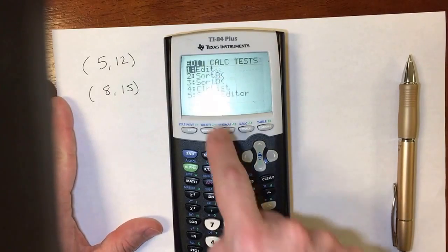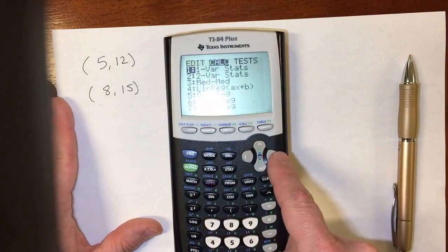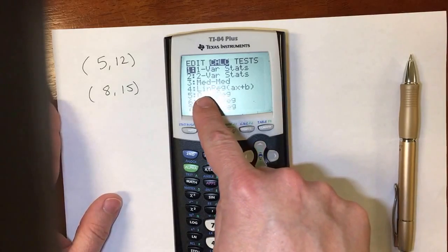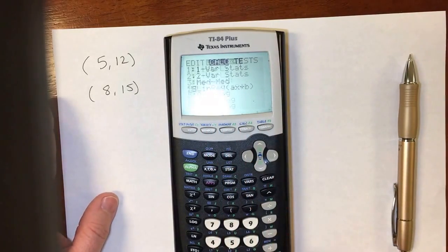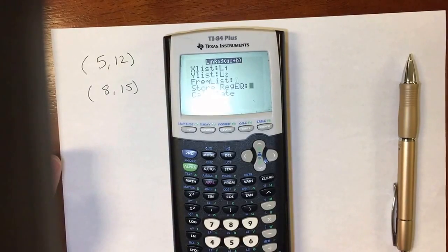So then I'm going to go to stat. I arrow over to calc for it to calculate for me. I want to do the linear regression of 4, and then just hit enter several times.